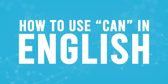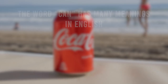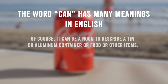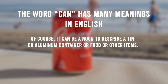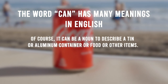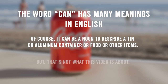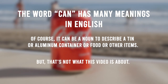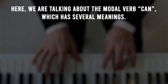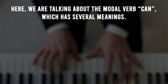How to use can in English. The word can has many meanings in English. Of course, it can be used as a noun to describe a tin or aluminum container for food or other items. But that's not what this video is about. Here we're talking about the modal verb can, which has several meanings.